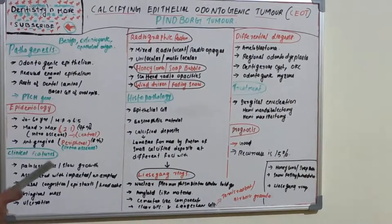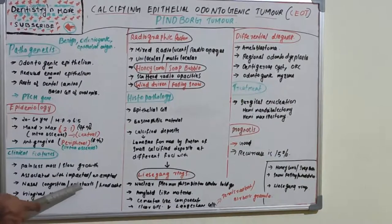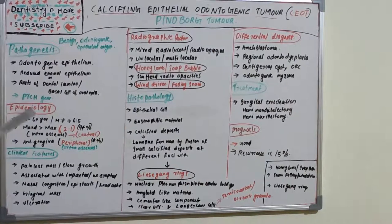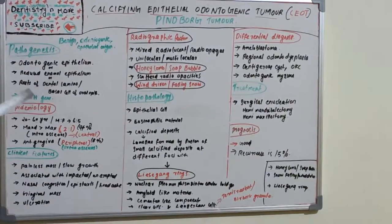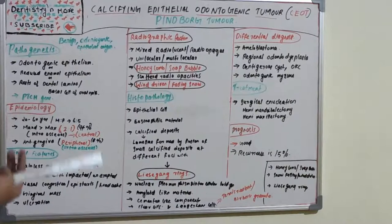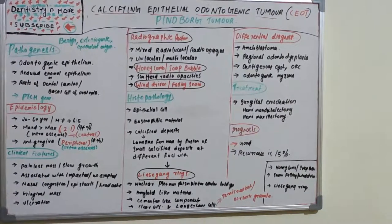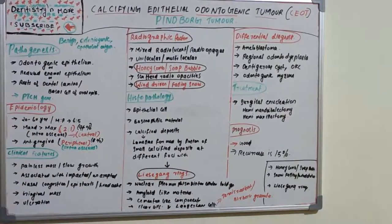Clinical features include a painless mass with slow growth, and it is associated with an impacted or unerupted tooth. There may be nasal congestion, epistaxis, or headache. The peripheral soft tissue or extraosseous type of CEOT appears most commonly as a painless firm gingival mass — an anterior gingival mass — and it shows a little bit of ulceration on the overlying mucosa.